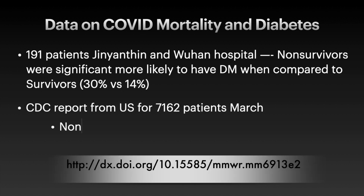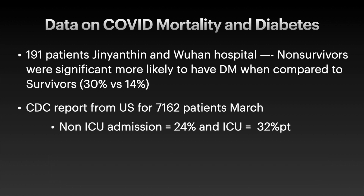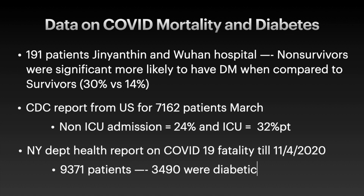The second data comes from the CDC report from the US for 7,162 patients from March 2020. They found that 24% of patients were diabetic among non-ICU admissions and in ICU, 32% of the patients were diabetic. The third comes from the New York Department of Health report on COVID-19 fatality till 11th of April 2020, with 9,371 patients taken into account, and 37% — that is 3,490 patients — were diabetic.